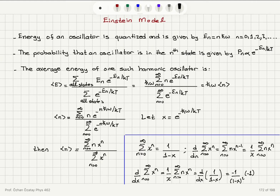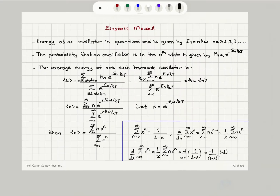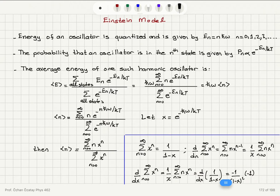What is the probability that an oscillator is in the nth state? It is given by the Boltzmann factor: exponential of minus the energy level divided by thermal energy kT — the absolute temperature T. This is basically the canonical distribution. We have an atomic oscillator in thermal contact with the rest of the lattice, which acts as a heat reservoir — a small system in contact with a large system.